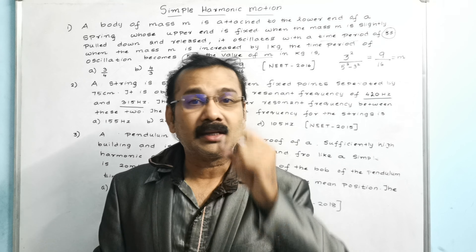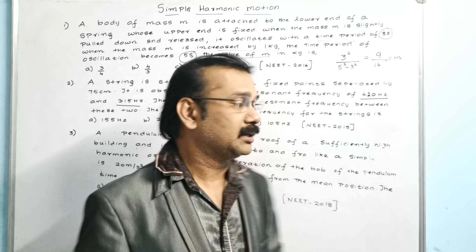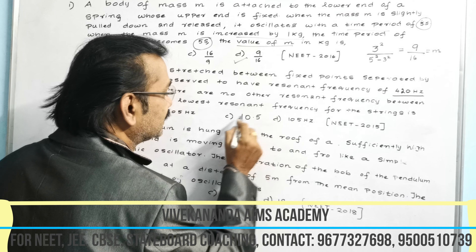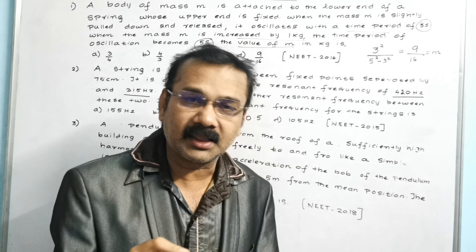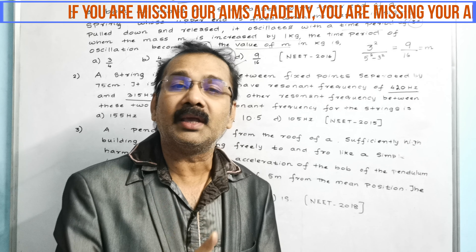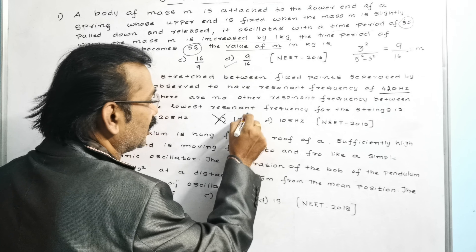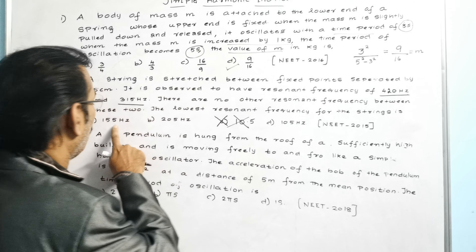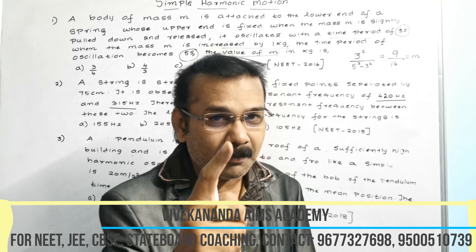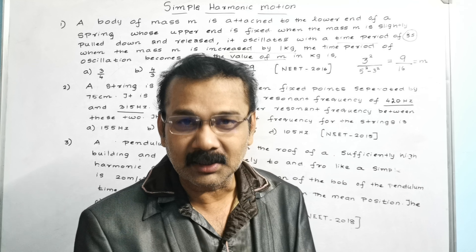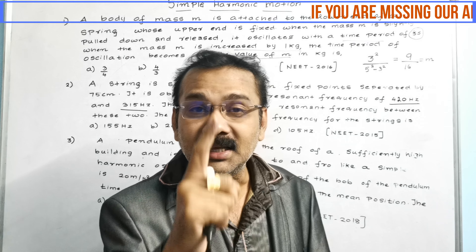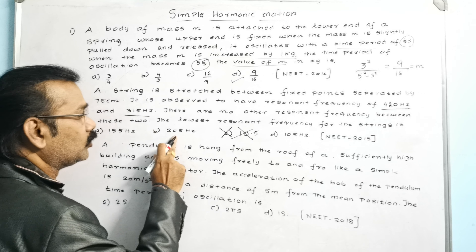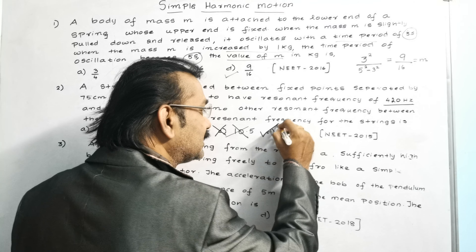In this question, first identify the incorrect answer out of the four options. The question frequencies are not given in decimals, therefore option C (10.5) is not the correct answer — just strike it off. The remaining three options are 155, 205, and 105. Now, which is the smallest number out of these three? The smallest number is 105.